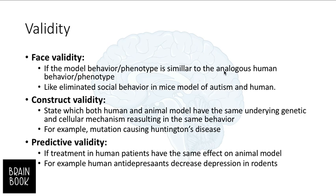What is face validity? If the model behavior or phenotype is similar to the analogous human behavior or phenotype, it is called face validity. For example, decreased social behavior in a mouse model of autism — both humans and rodents with autism show eliminated social behavior. We can see the same phenotype in these two species, which is called face validity.